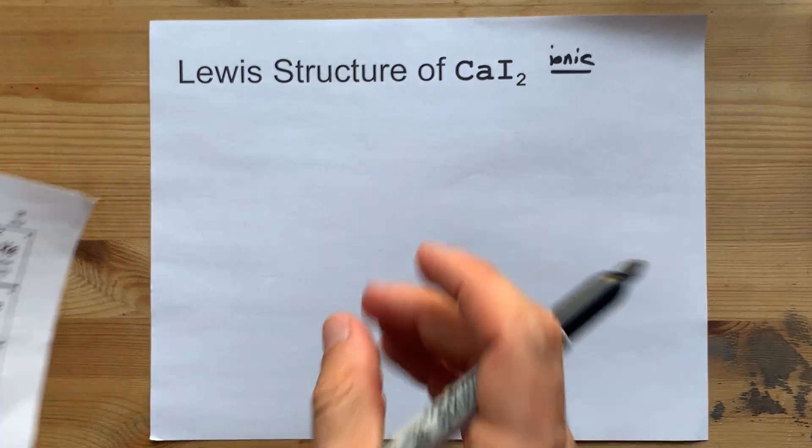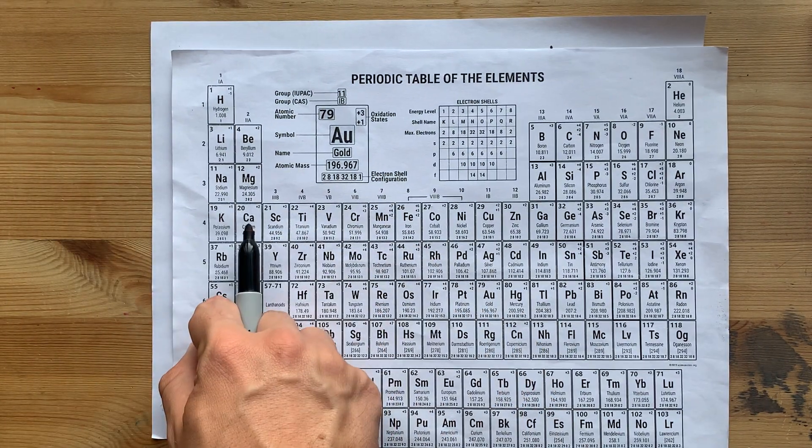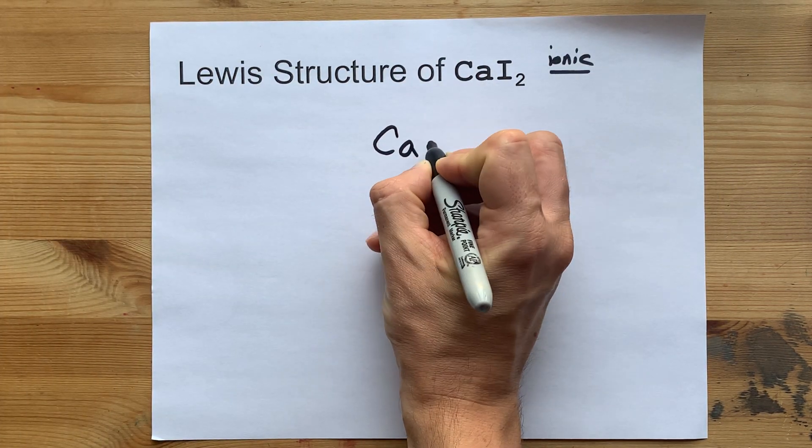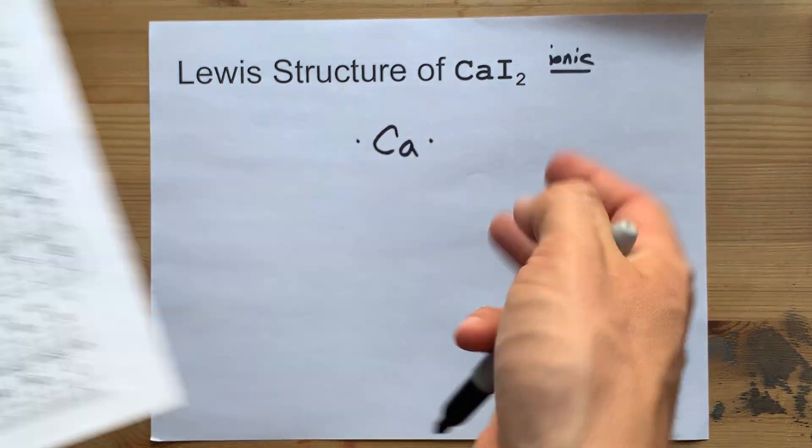There's going to be a transfer of electrons from one to the other. Calcium is in the second column, that means it brings two valence electrons. One, two. That's just the Lewis structure for the atom.